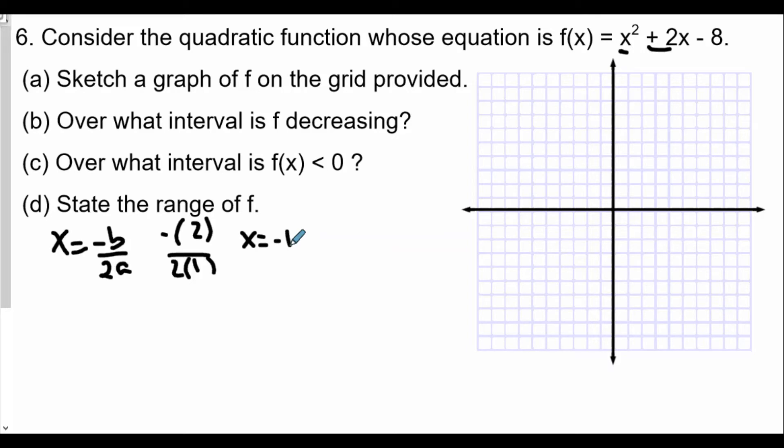That's going to be our axis of symmetry. Now to find the matching y-value, f(-1) is equal to (-1)² + 2×(-1) - 8. And so we'll get in this case 1 - 2 - 8 or equal to -9. So the vertex in this case will be here, (-1, -9).